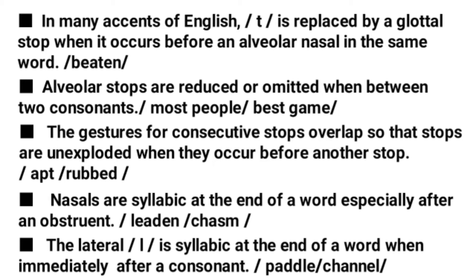Consider this example for explanation: 'bitten' — the alveolar nasal in this example is N, and what comes before it is T. So what happens to T? It is replaced by a glottal stop. Another similar example is 'button', which can be pronounced 'bu'on'.